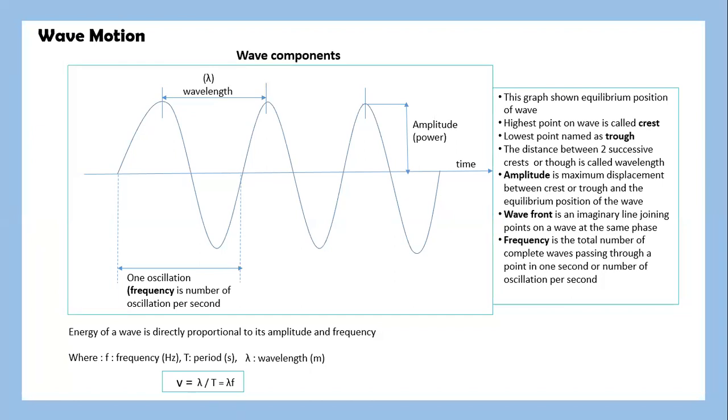Wave motion. This graph shows an equilibrium position of wave. The highest point on wave is called crest and the lowest point named as trough. The distance between two successive crests or troughs is called wavelength.